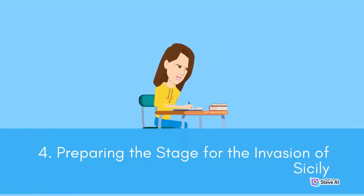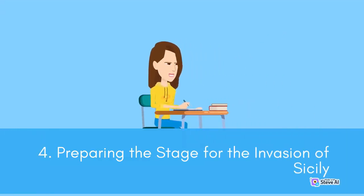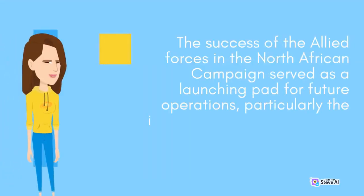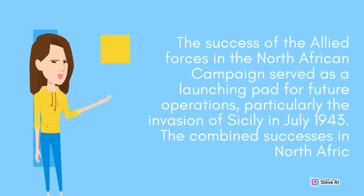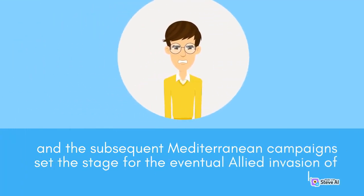Preparing the stage for the invasion of Sicily: the success of the Allied forces in the North African campaign served as a launching pad for future operations, particularly the invasion of Sicily in July 1943. The combined successes in North Africa and the subsequent Mediterranean campaigns set the stage for the eventual Allied invasion of Italy.